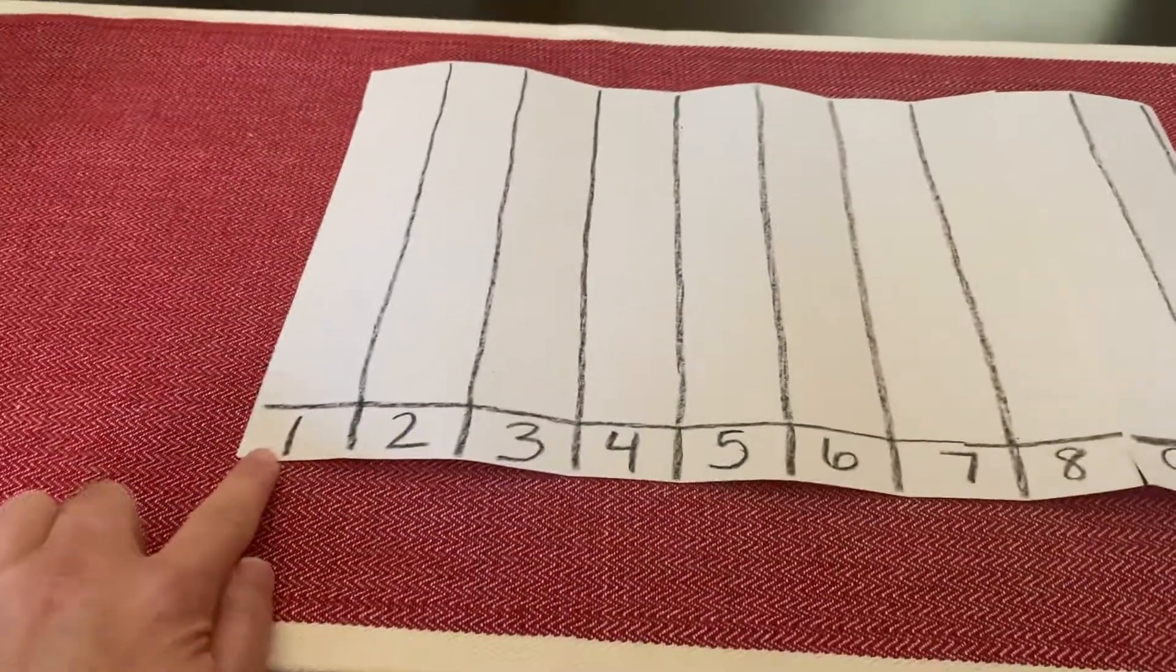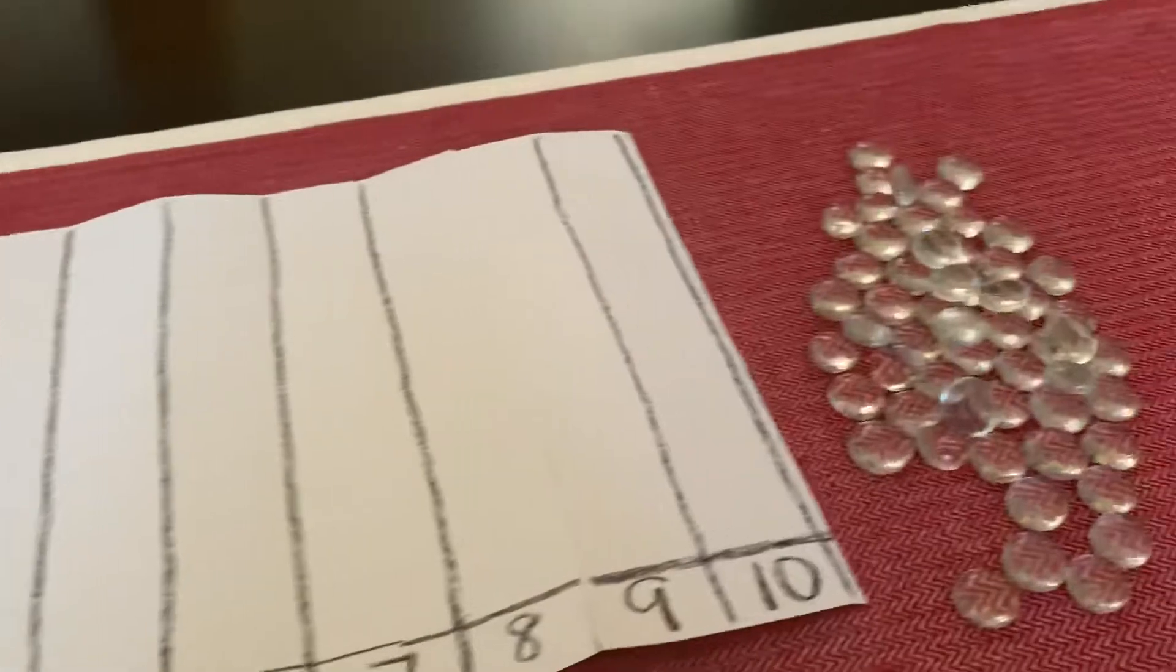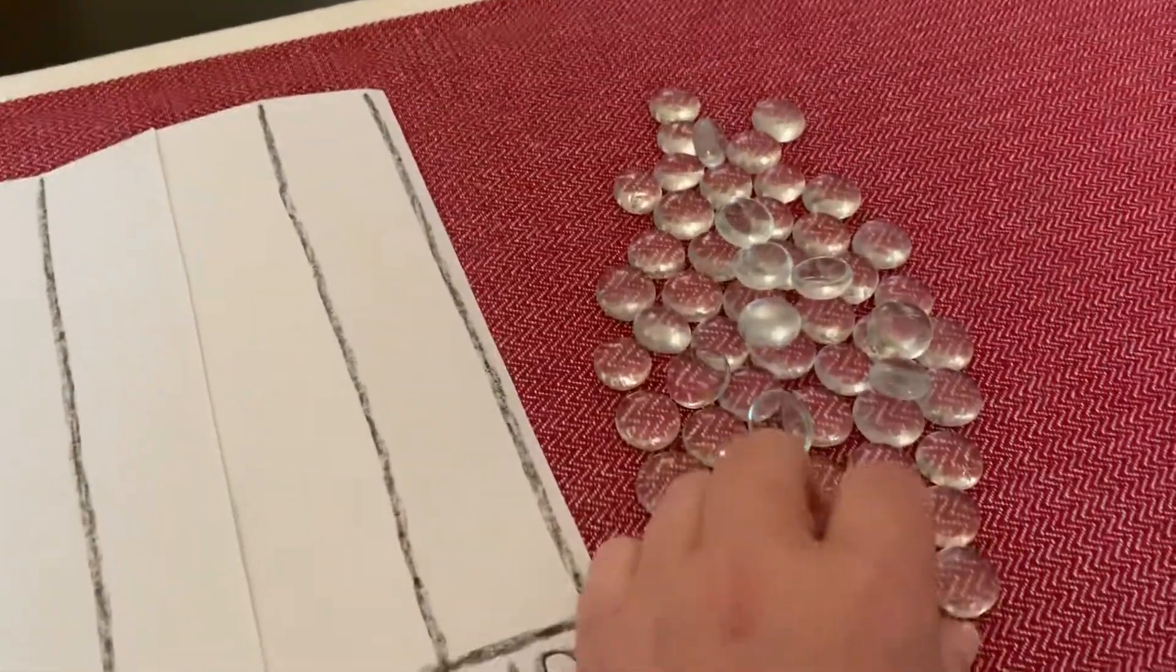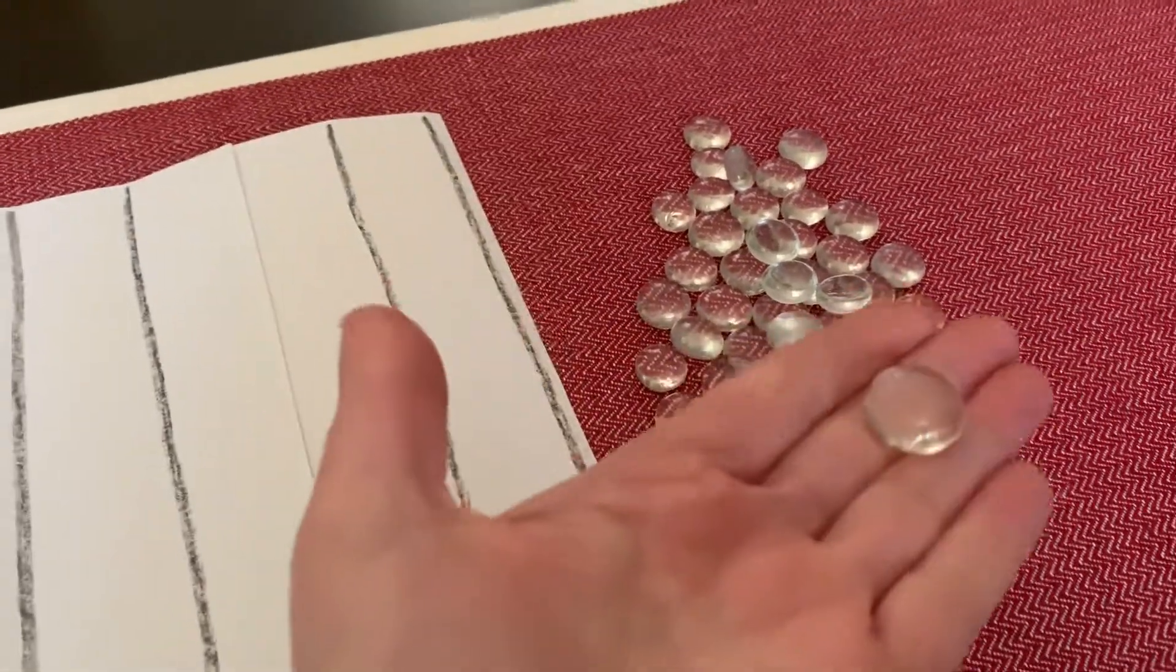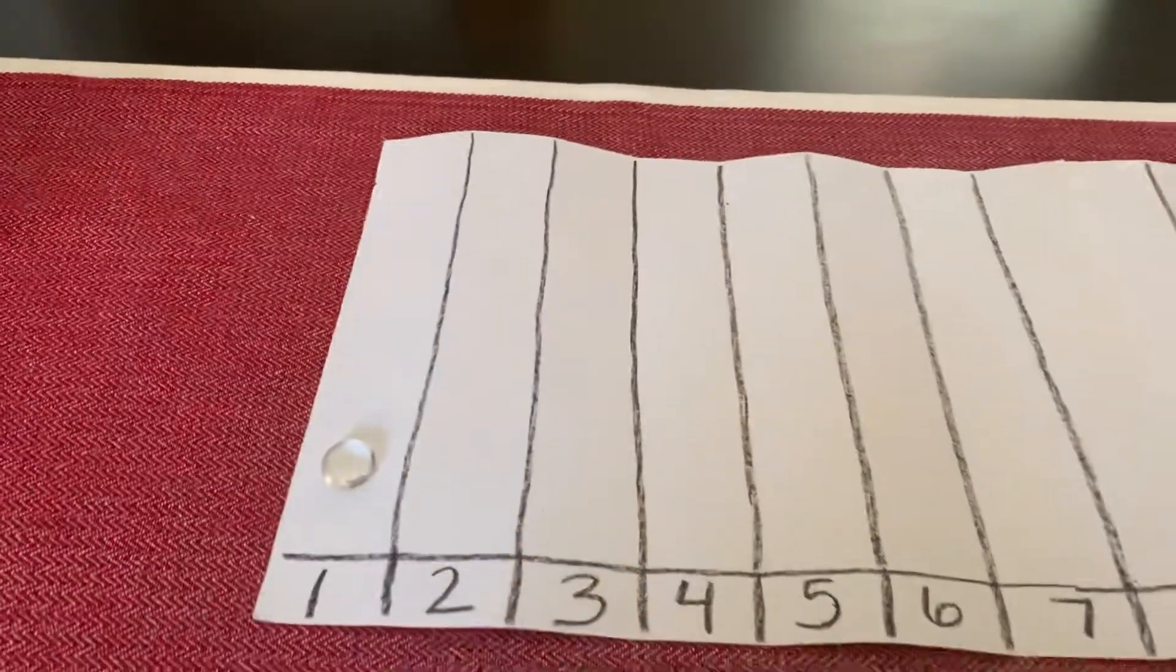So let's start with this number, boys and girls. What number is that? The number 1. So we're going to come over here and we are going to pick up 1 jewel. And then we are going to put it over here in our column with number 1.